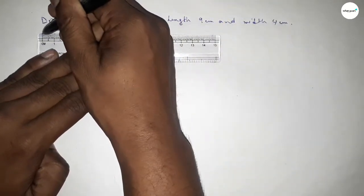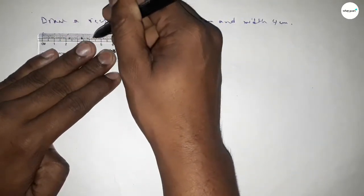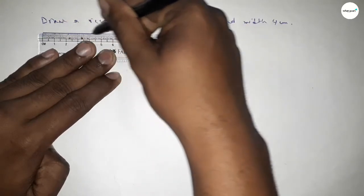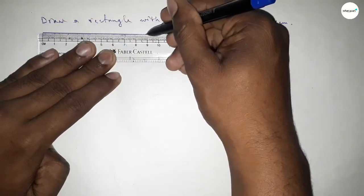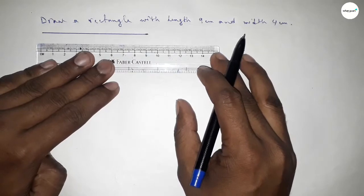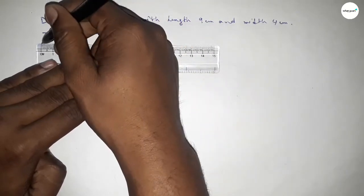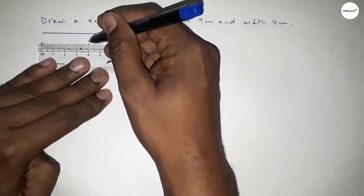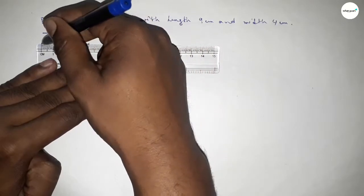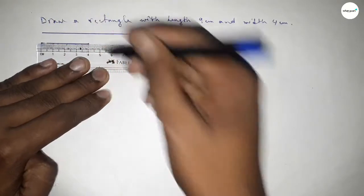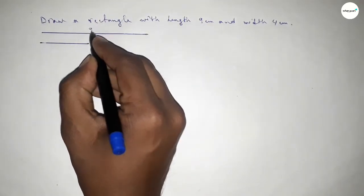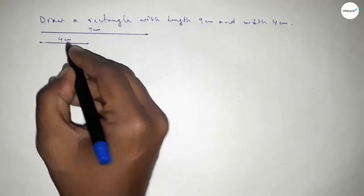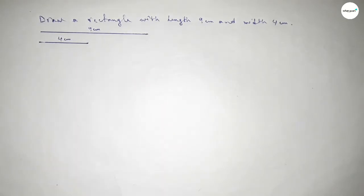First of all, we have to draw a line of length 9 centimeter — so this is 9. Next, drawing a line of length 4 centimeter — so this is 4. So this one is the 9 centimeter line and this one is the 4 centimeter line.